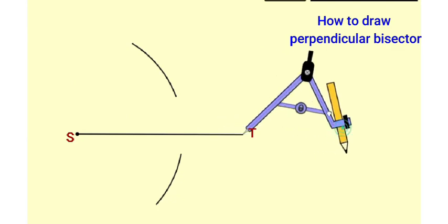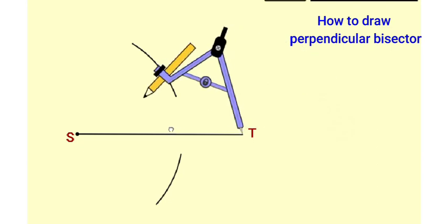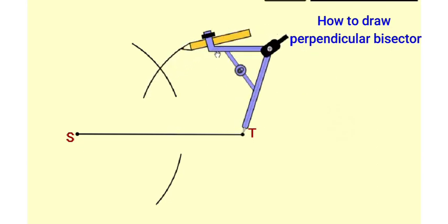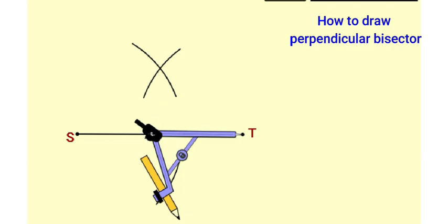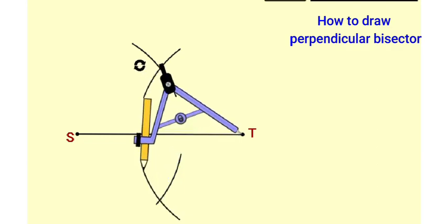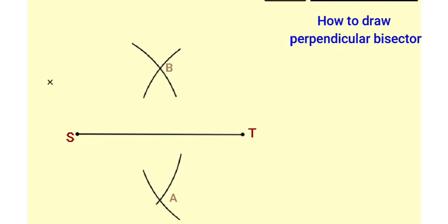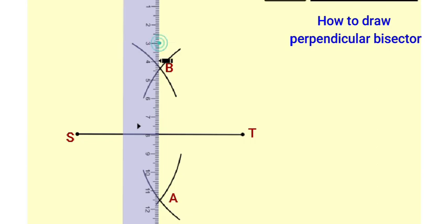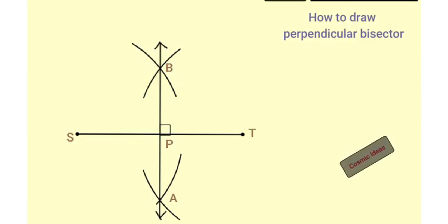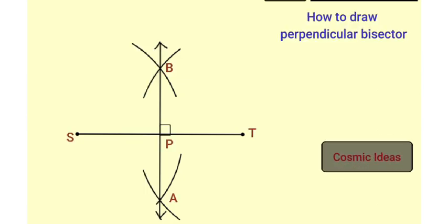Now through point T, draw arcs on both sides of segment ST. We get two intersecting points. Name these points as A and B. Join points A and B and draw line AB.